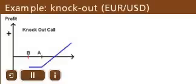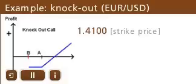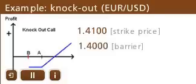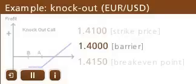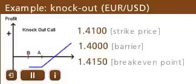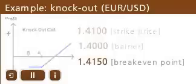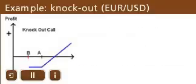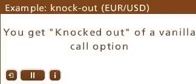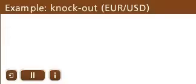For example, imagine you buy a knock-out call option on the EURUSD with a strike price of 1.41, a barrier of 1.4, and a break-even point of 1.415. If the EURUSD currency pair remains above the barrier at 1.4, keeps you in the vanilla call option, and moves up above the break-even point of 1.415, you will be profitable on your knock-out call option trade. A knock-out option is an option that automatically expires worthless when the underlying currency pair trades at or beyond a specified price level, known as the barrier, before expiry — in other words, you get knocked out of a vanilla call option if the currency pair touches a certain price.